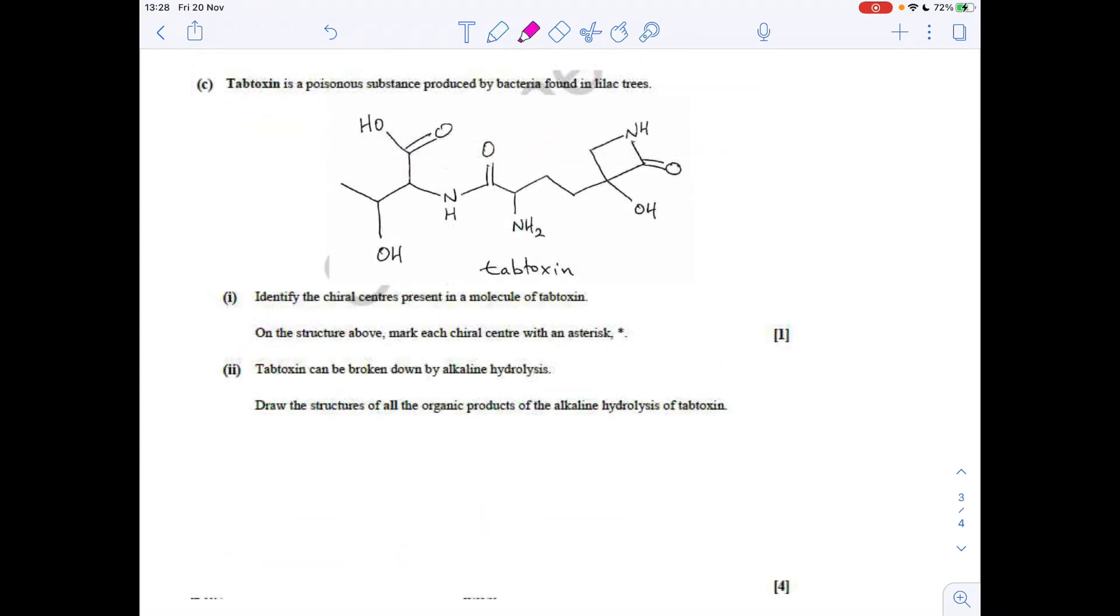The next question, identify the chiral centres present in this molecule. We've got one there. Remember, we're looking for carbon atoms with four different groups attached. That one there, there's another one, there's one there, and there's one there. So there's four altogether.